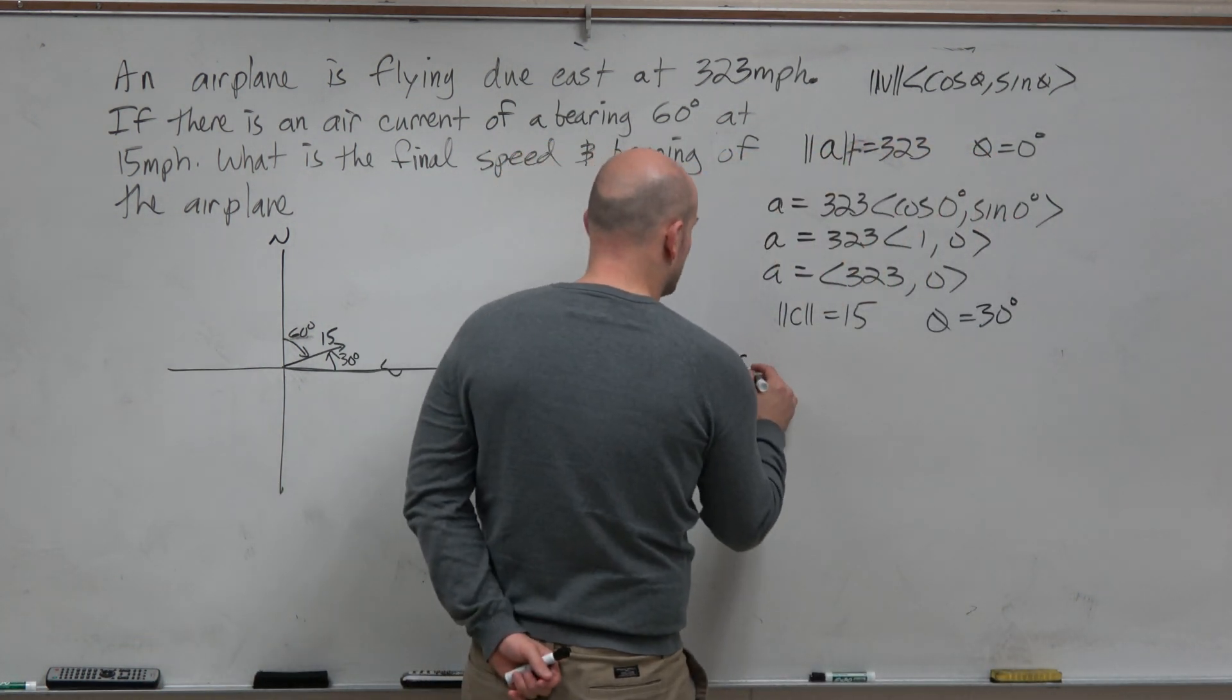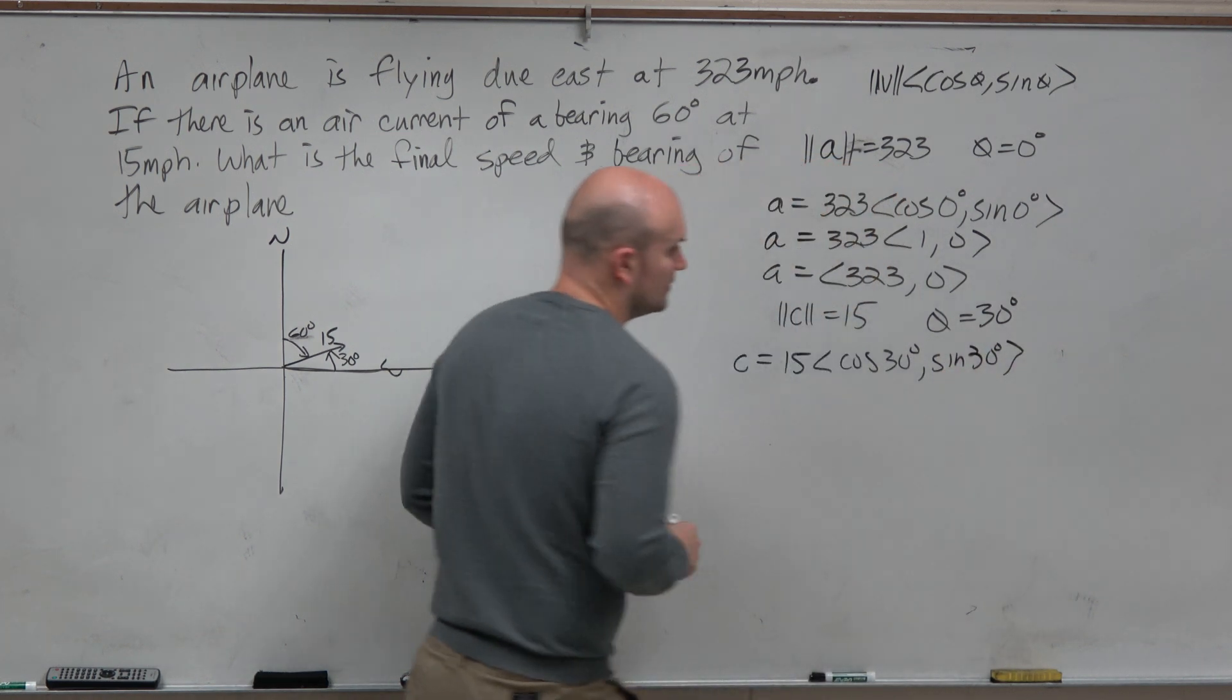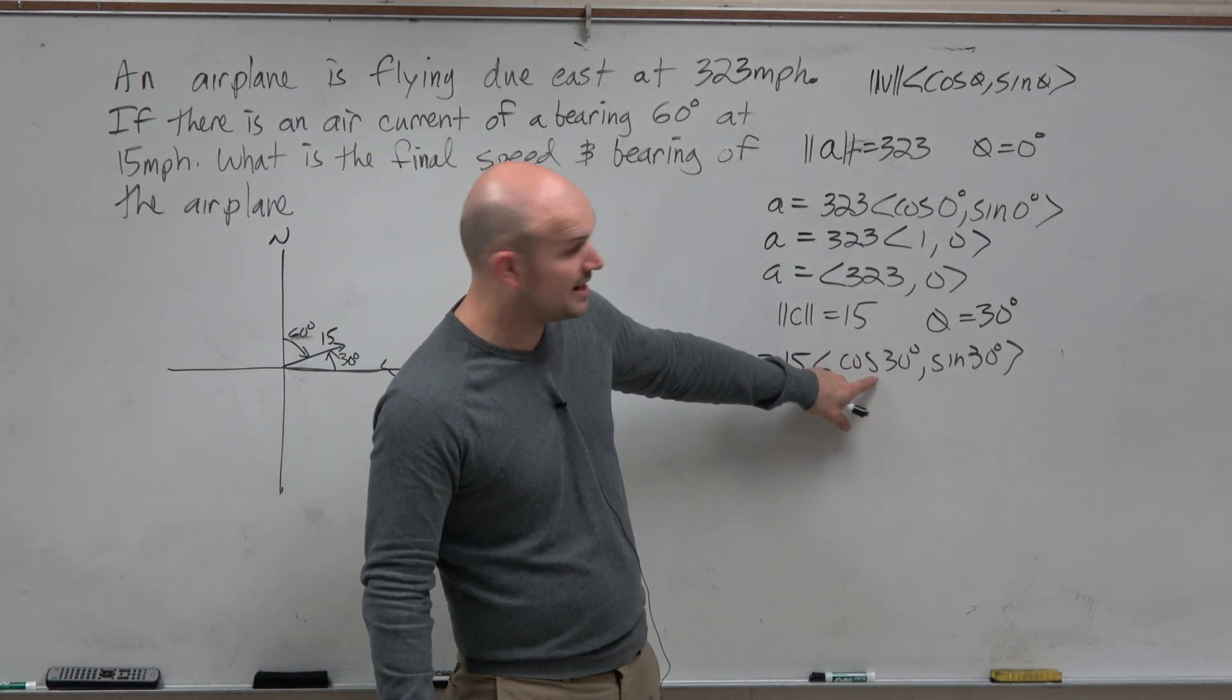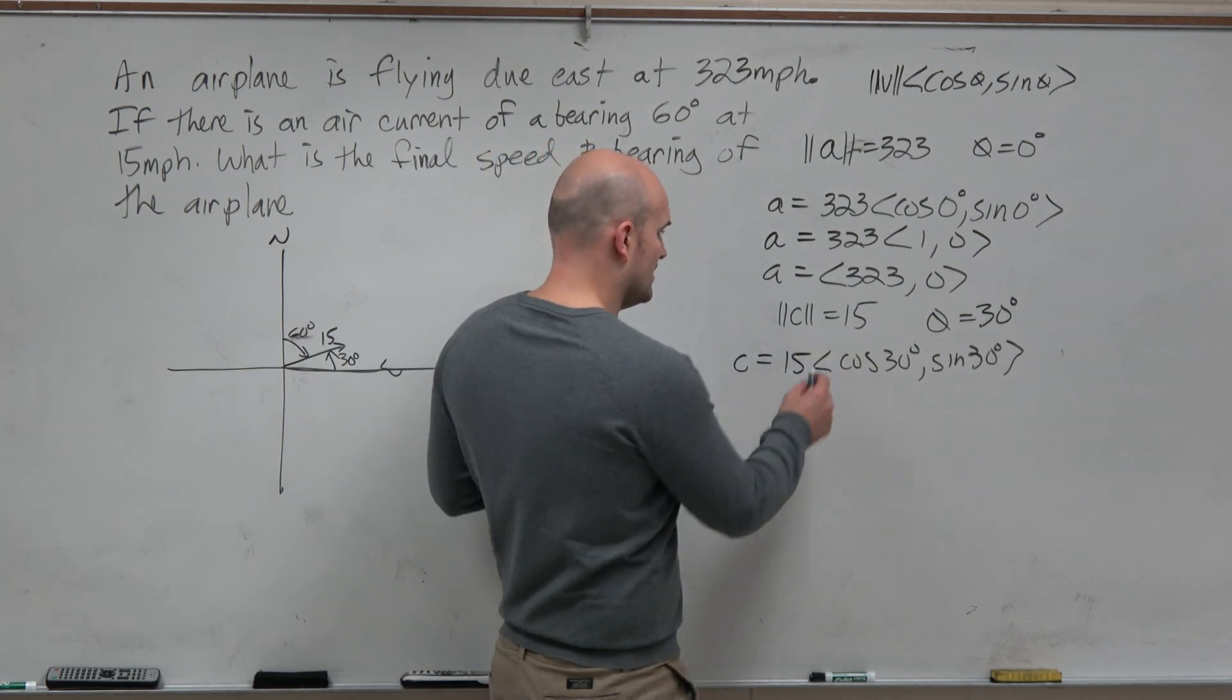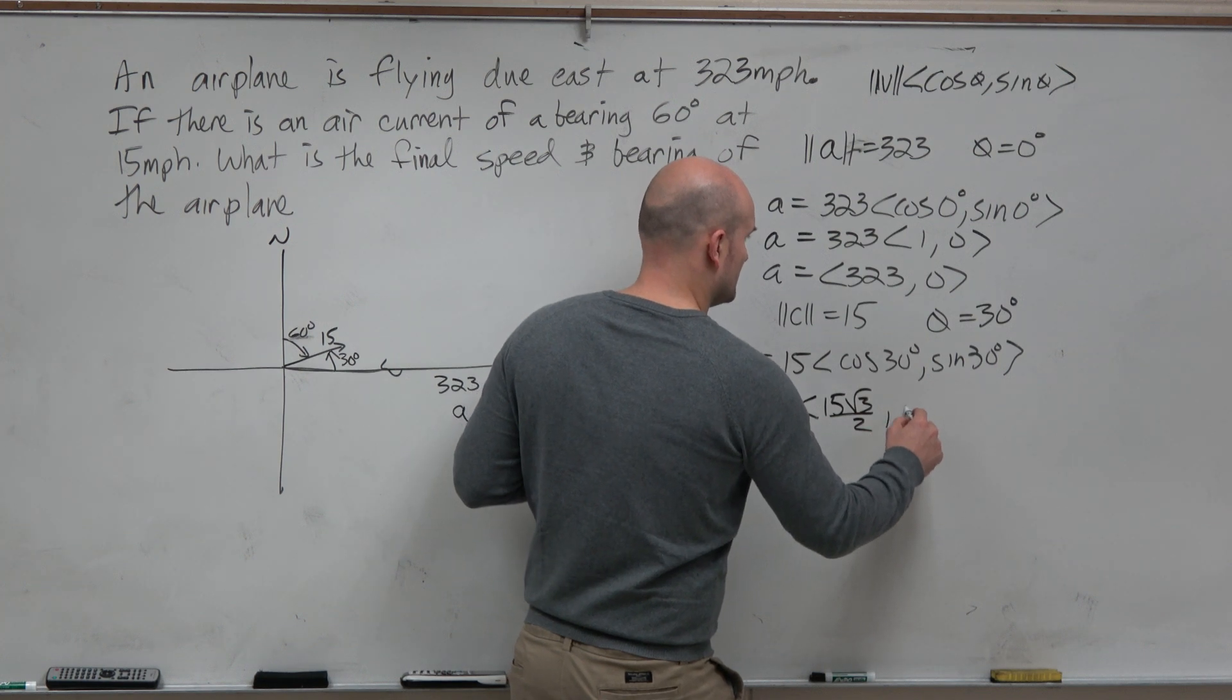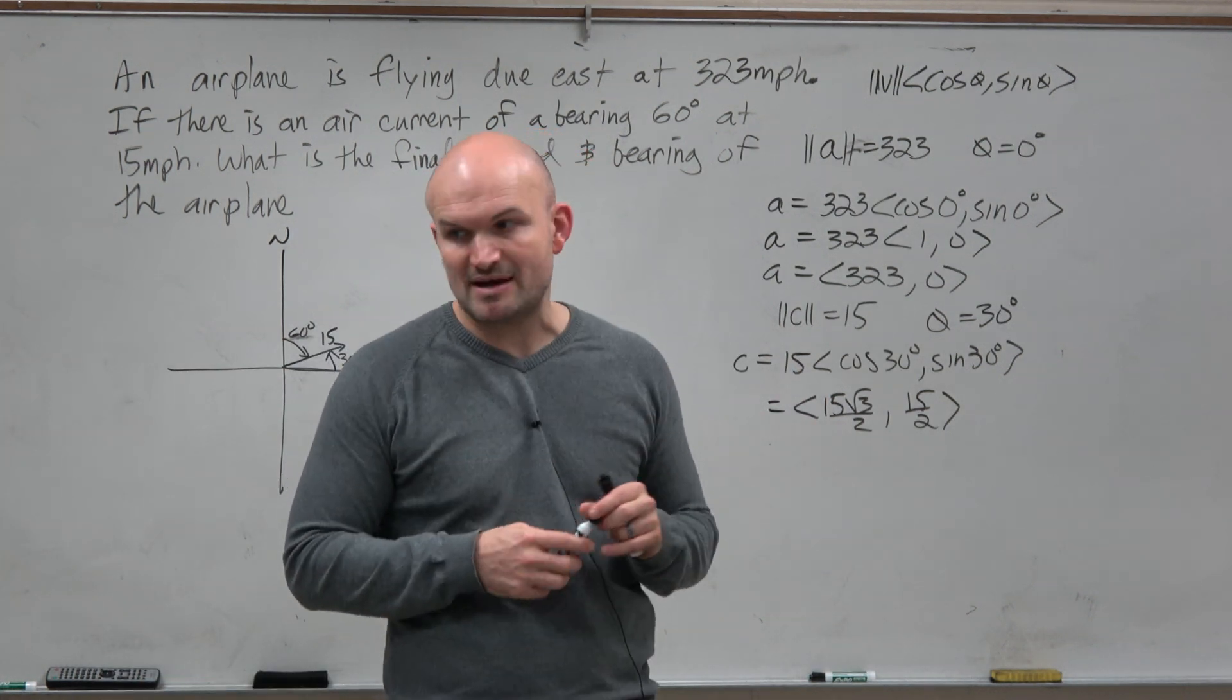We can write vector C as 15 times the cosine of 30 degrees times the sine of 30 degrees. I'm being nice. Did I pick something that was on the unit circle? Yeah. So we could just go ahead and evaluate this. Square root of 3 over 2 and 1 half. We don't need to plug in our calculators and use decimals. And then let's just distribute the 15. So therefore, this is going to be 15 times the square root of 3 over 2 comma 15 halves. You could type that all into your calculator and get the decimals, but I'm going to save that for later.